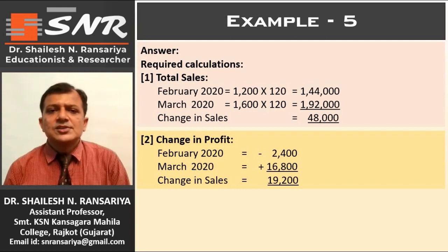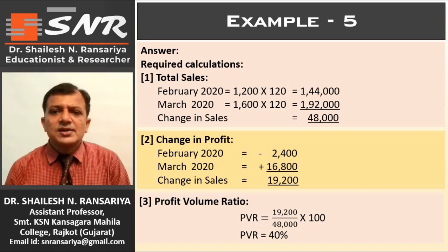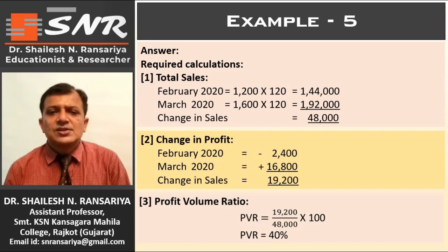Third calculation is for the profit-volume ratio. PVR = (Change in Profit / Change in Sales) × 100. Change in profit is ₹19,200 and change in sales is ₹48,000. So the PVR is 40%.